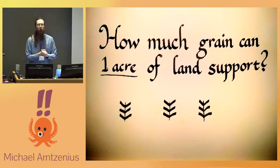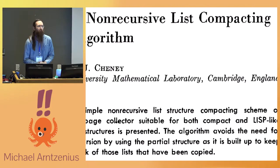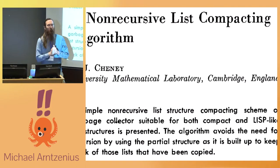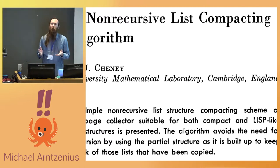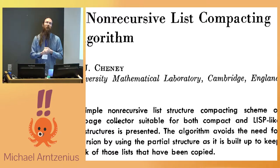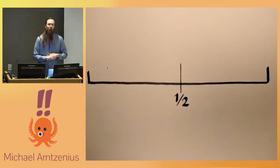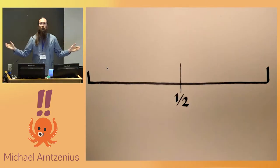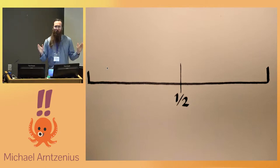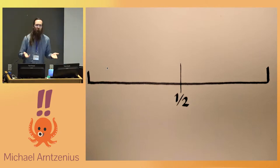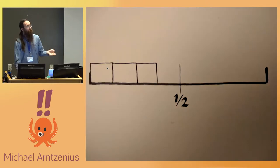To solve this — and luckily, like many other fundamental problems in computer science, this was solved in the 1970s — I'm going to turn to a paper on what I would call the world's simplest garbage collection algorithm. It works like this: you divide your memory space into two halves. When your program wants some memory, you allocate and allocate and allocate.